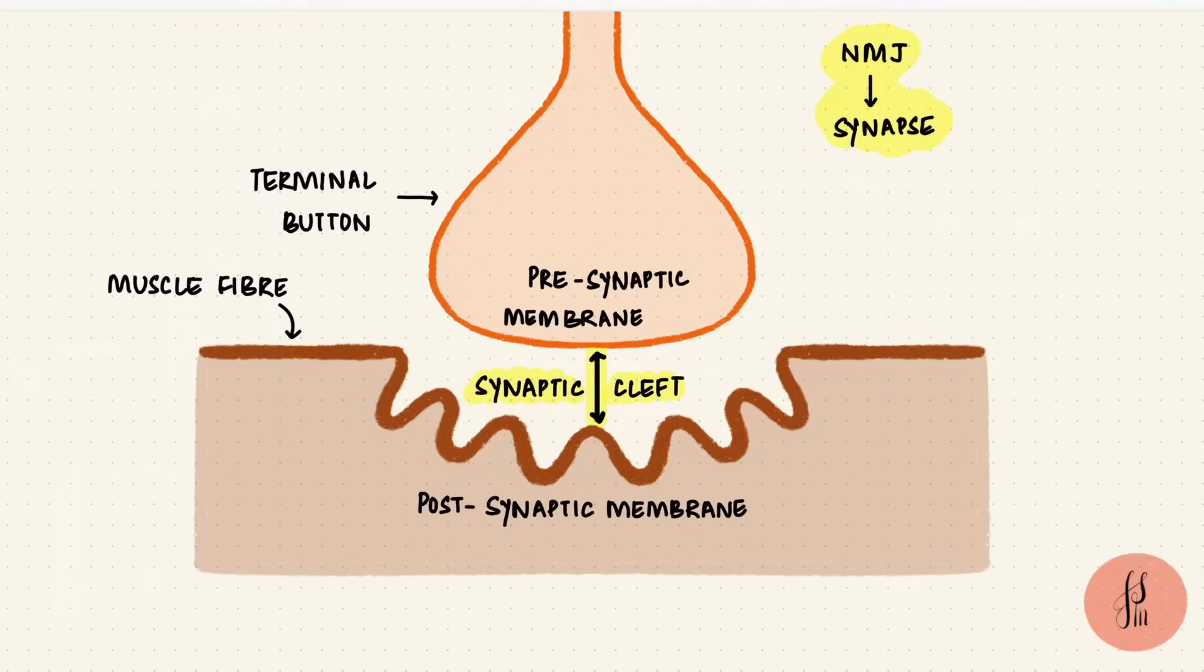The neuromuscular junction is a chemical synapse. Why? Because it uses a chemical neurotransmitter for communication. That neurotransmitter is acetylcholine, which is a small molecule neurotransmitter. It can get synthesized in the synaptic terminal itself.